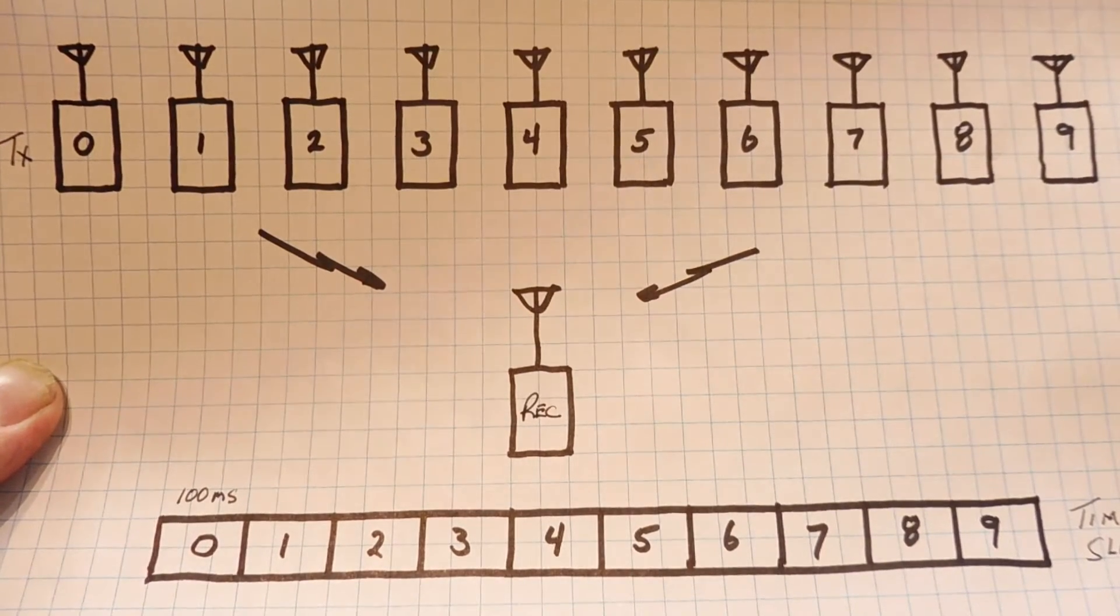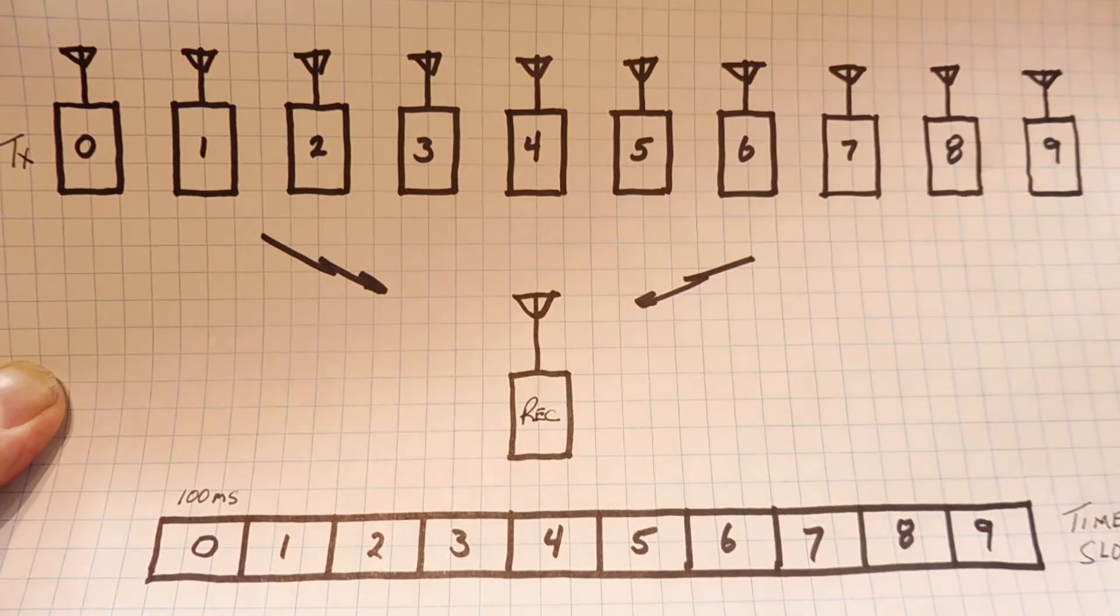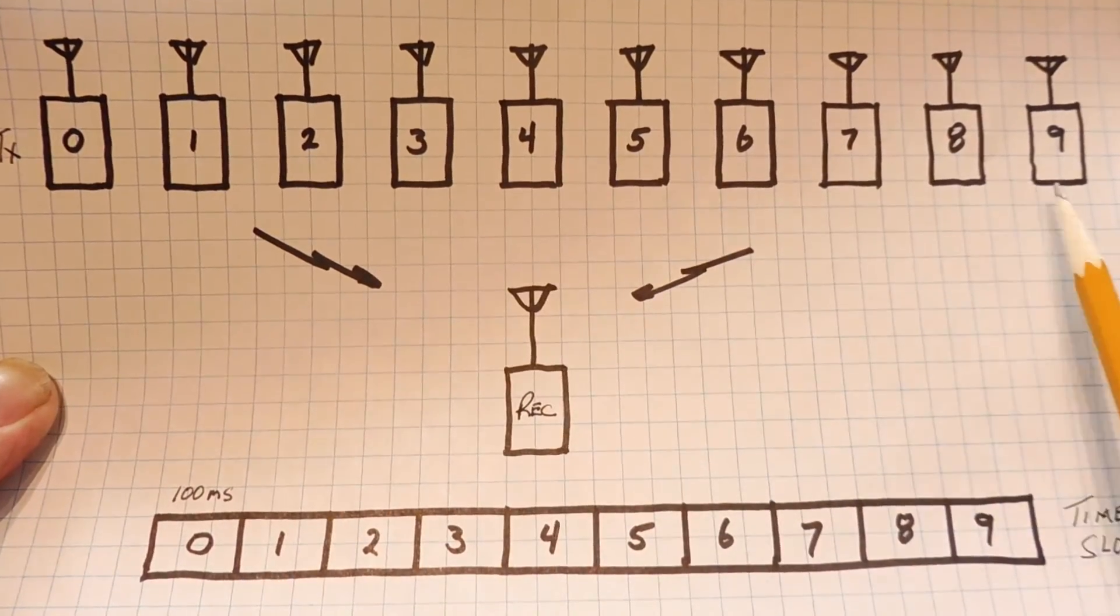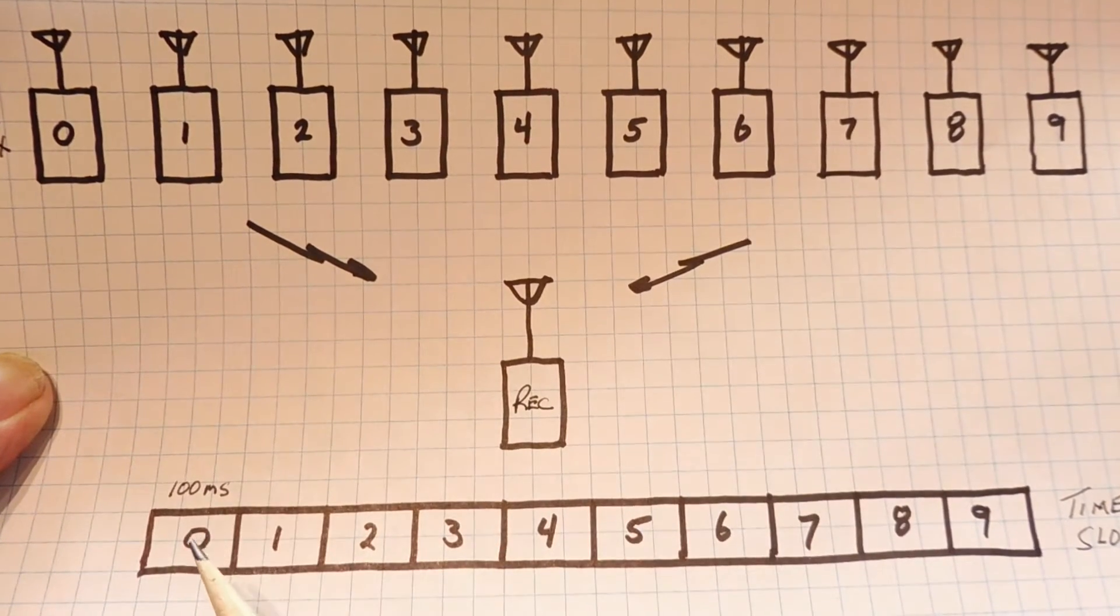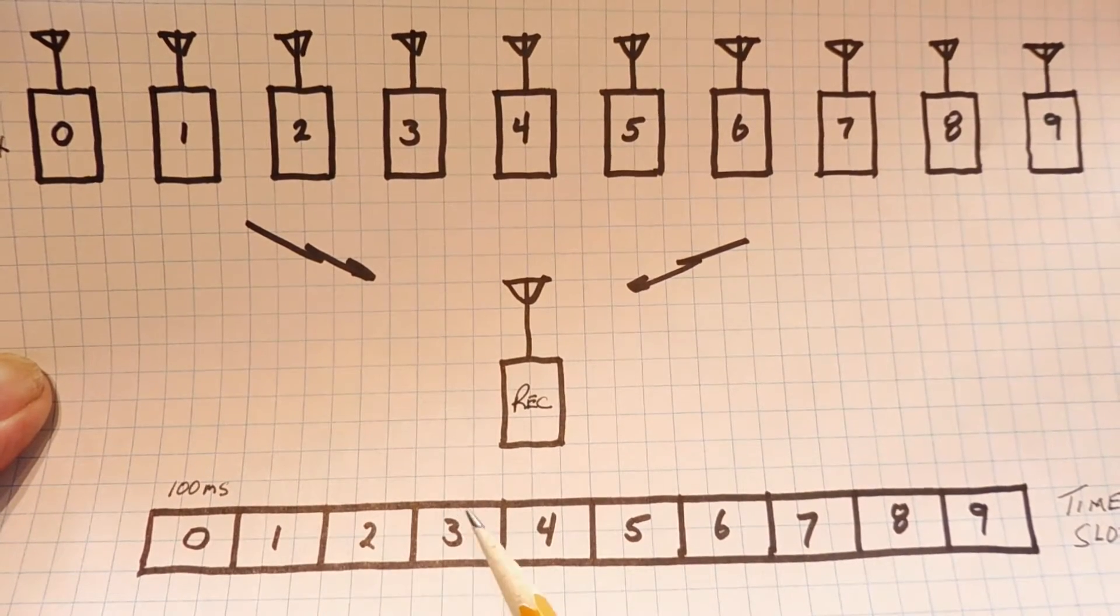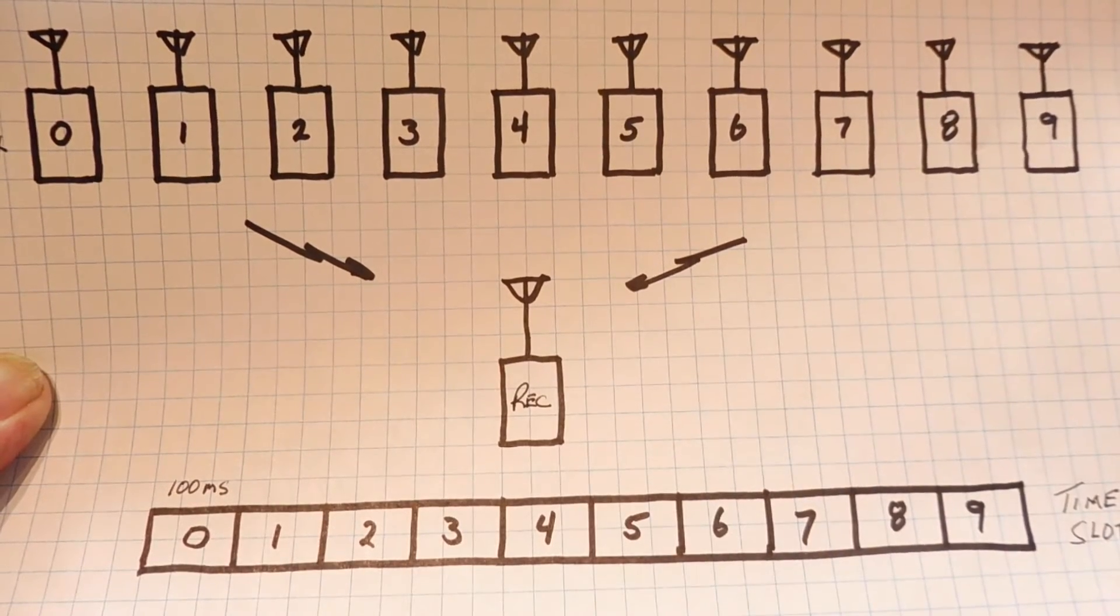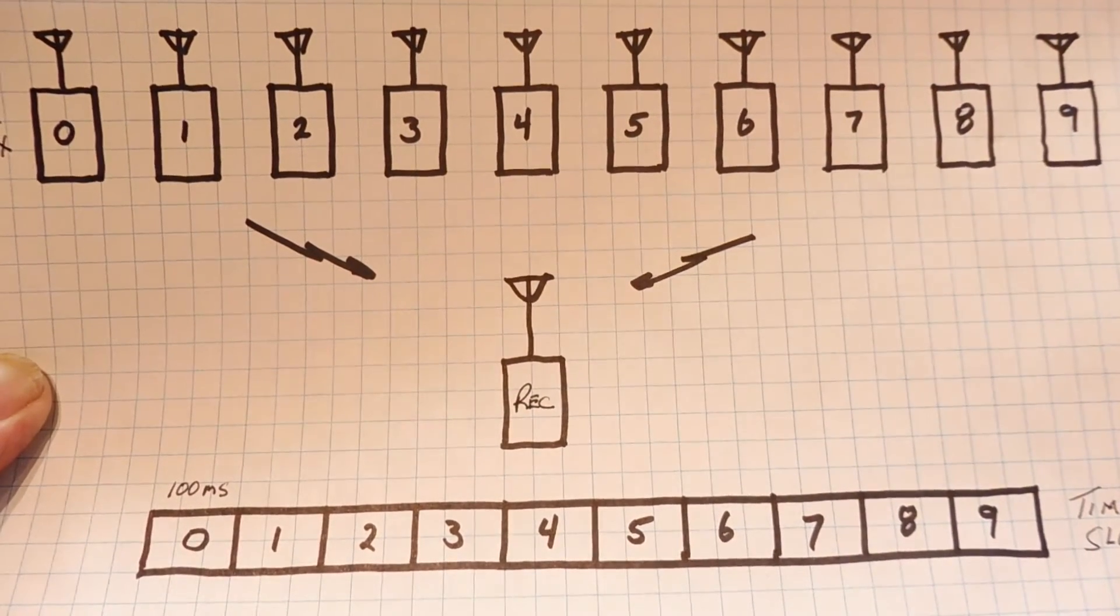So what they did, they gave each radio a time slot. So the first radio will have time slot 0 and time slot 1, 2, 3, 4, all the way up to time slot 9. So we see down here, each time slot would be 100 milliseconds. So with 10 radios and 100 milliseconds time slot, you'll get a one second time to run through all the radios.